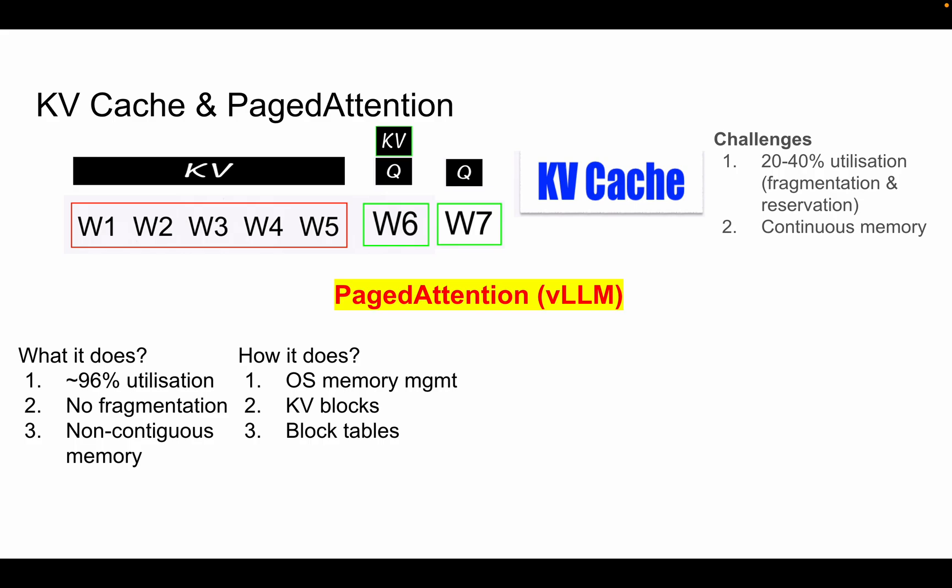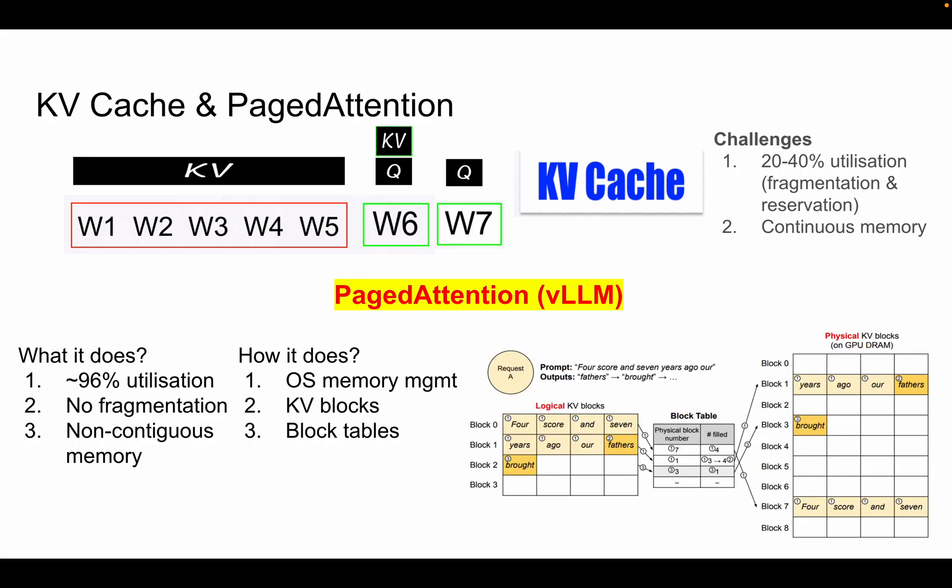Once we have these blocks, we need something to link them together. These are called virtual blocks, and we need to map them to physical blocks. That's where the concept of a block table comes in — similar to the concept of a page table in an operating system. Let's take a concrete example to look at the details of how this works.